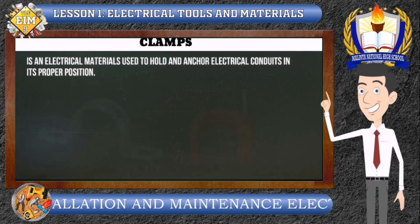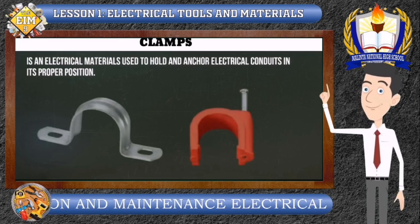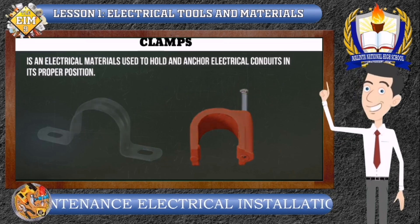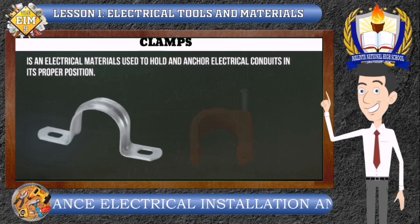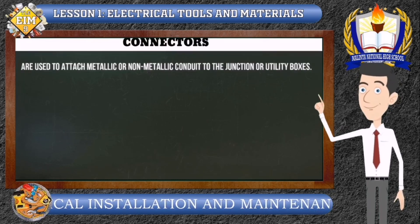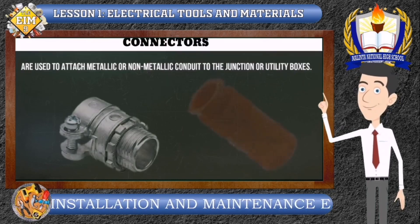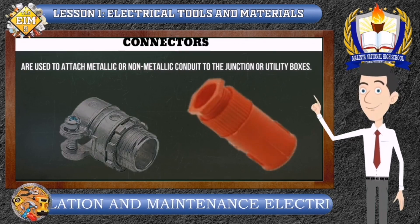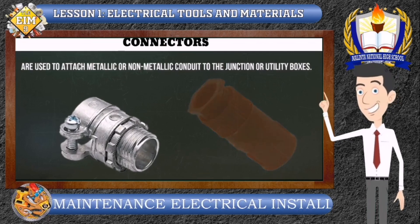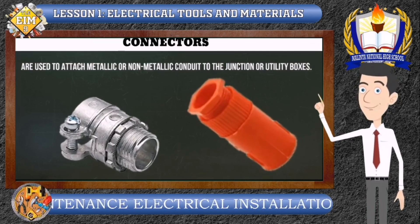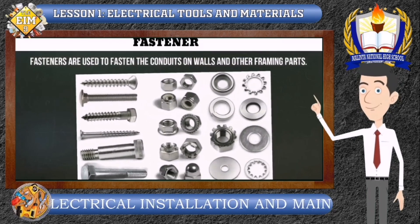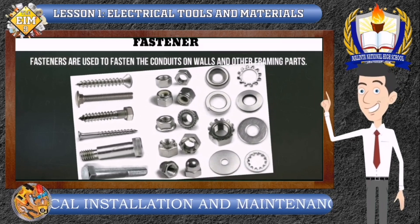Clamps are electrical materials used to hold and anchor electrical conduits in their proper position. There are two types of clamps: metal clamp and plastic clamp. Connectors are used to attach metallic or non-metallic conduit to the junction or utility boxes. We have metal connectors and flexible non-metallic connectors. Fasteners are used to fasten the conduits on walls and other framing parts.